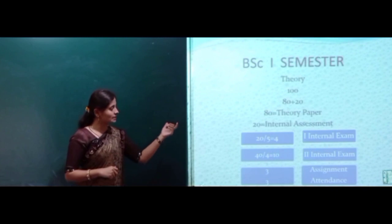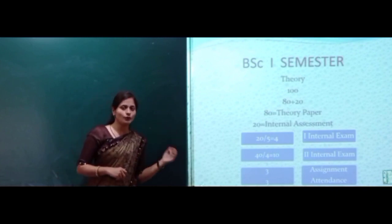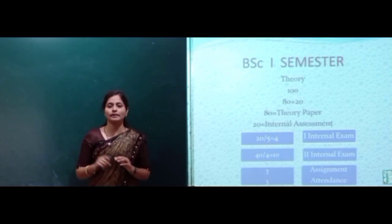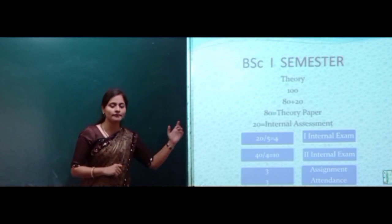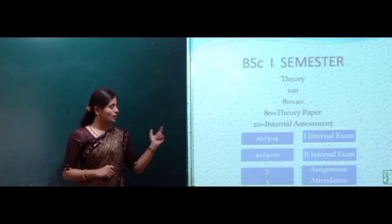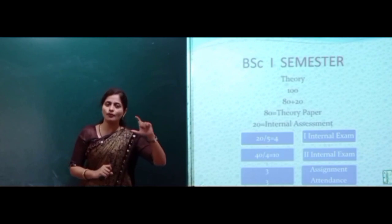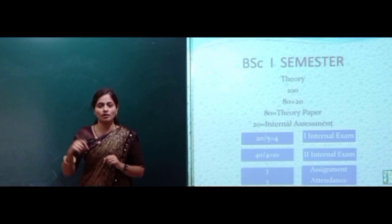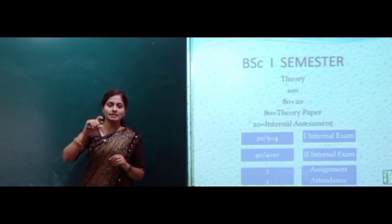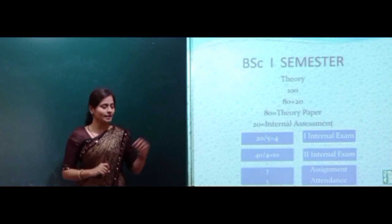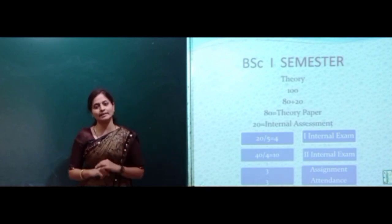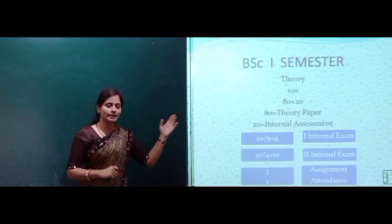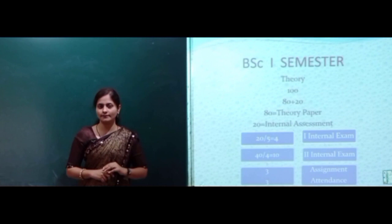The internal assessment can be divided into four parts. First, we will take a first internal examination of 20 marks considered as 4, and the second internal examination of 40 marks considered as 10, and 3 for the assignment and 3 for the attendance. So 4 plus 10 plus 3 plus 3 equals 20 internal assessment marks. This is for the theory paper.